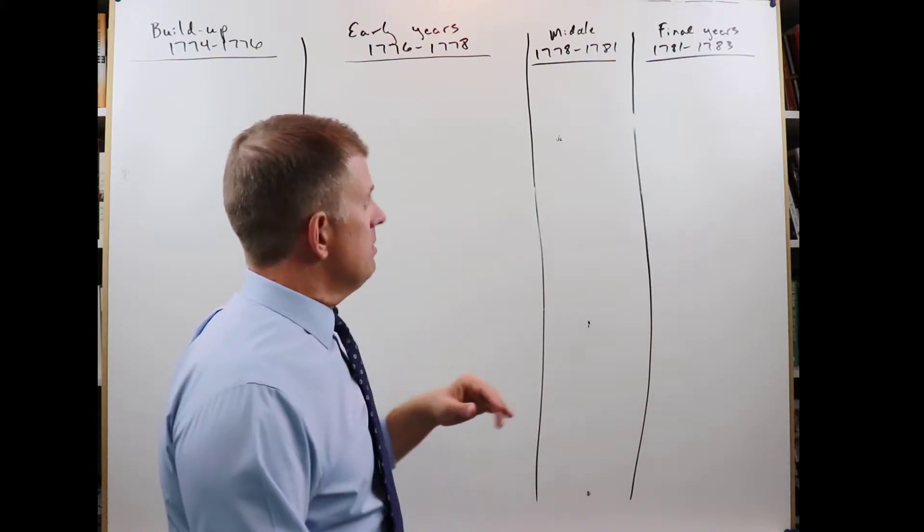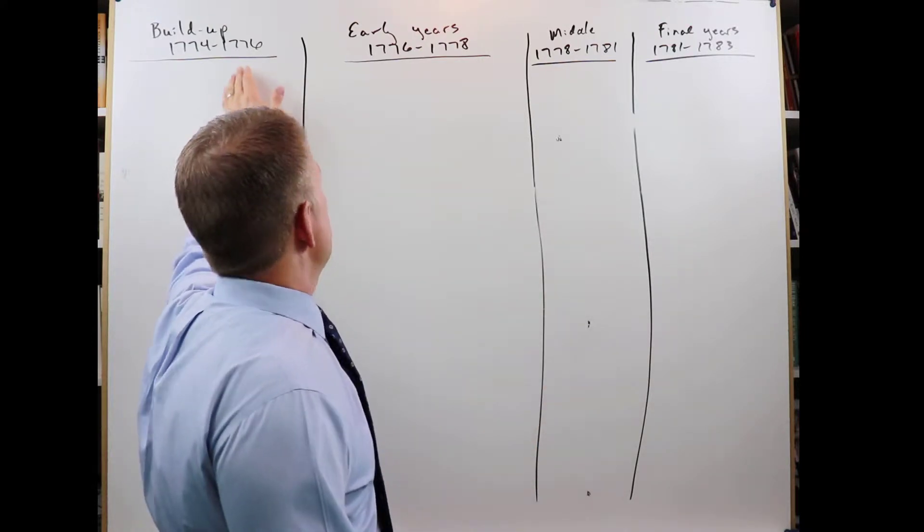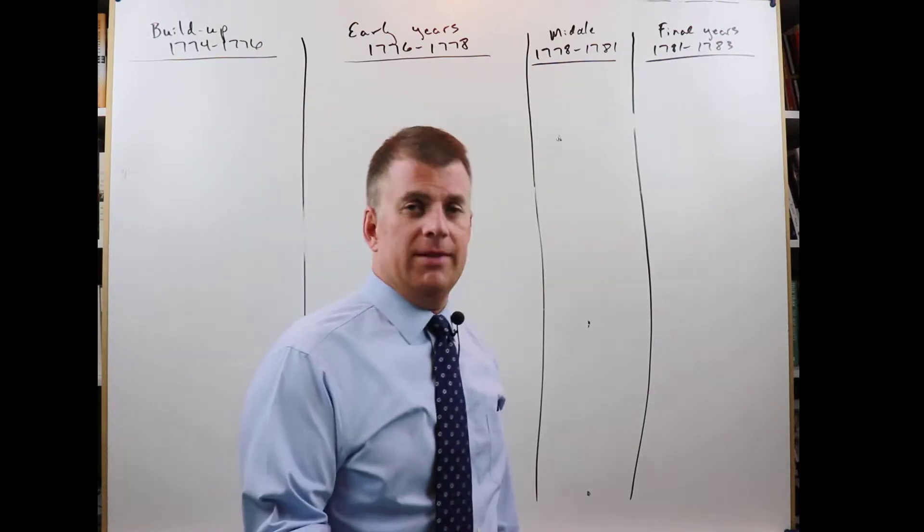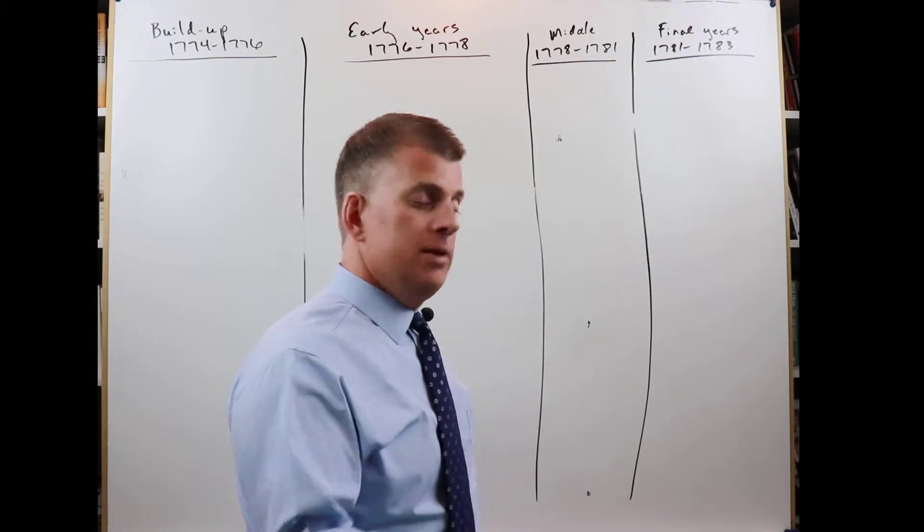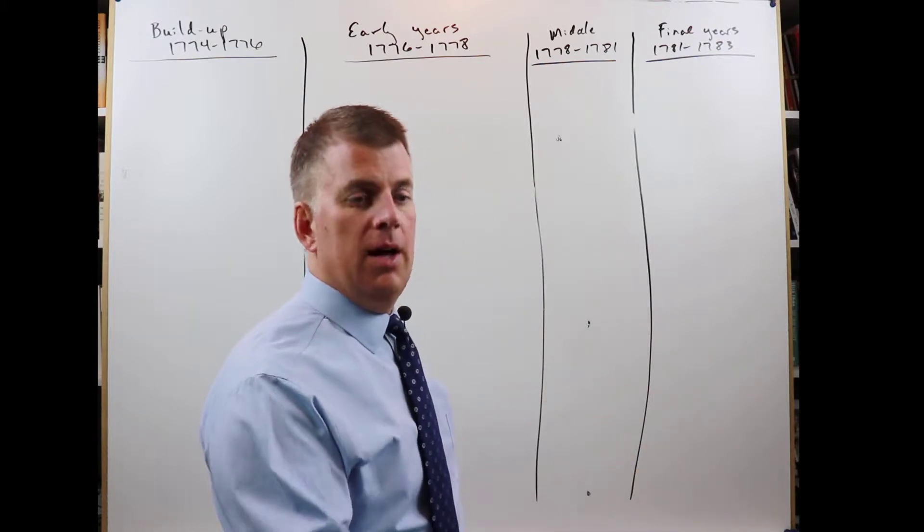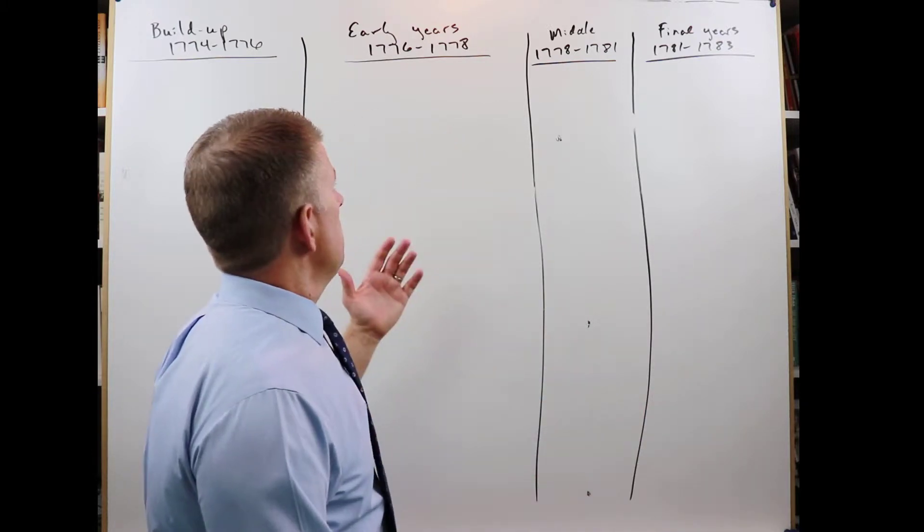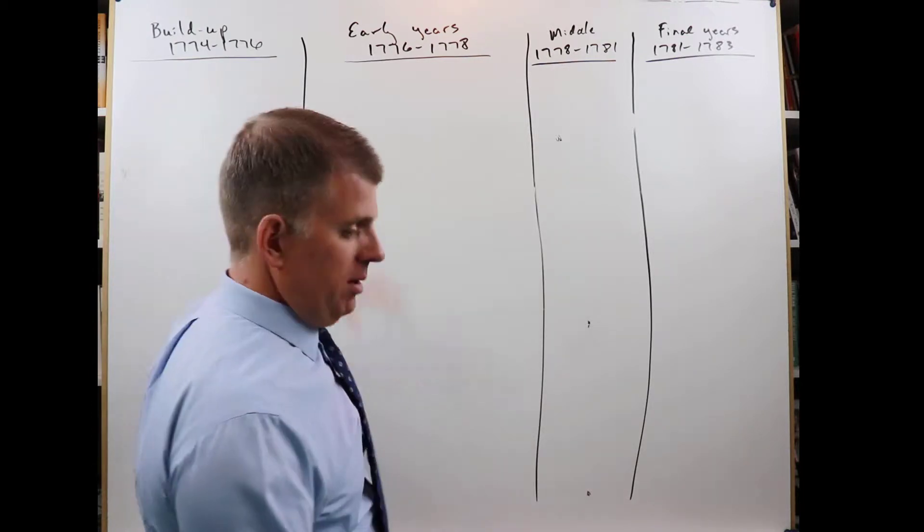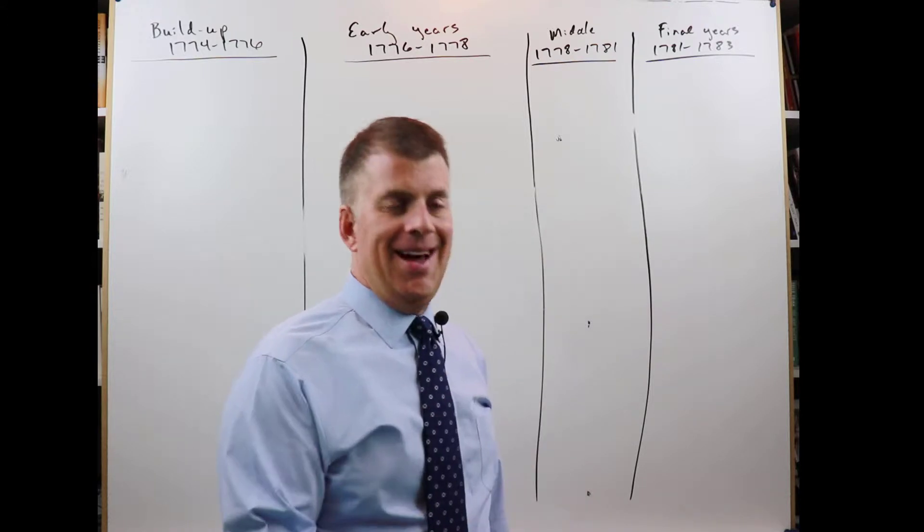Most people think, probably, that the American Revolution, if they think about it at all, started in 1776, because that's when the Declaration of Independence was read, was signed. But actually, the fighting started earlier, and preparations for the revolution started earlier than that.